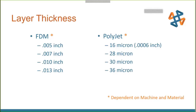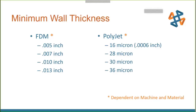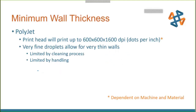Looking at minimum wall thickness: on PolyJet, printing at 600 by 1600 DPI produces very fine droplets, so you can make walls as thin as 5 thousandths of an inch. However, they're extremely delicate and fragile to handle and clean. You can do it, but just remember they'll be tougher to handle.